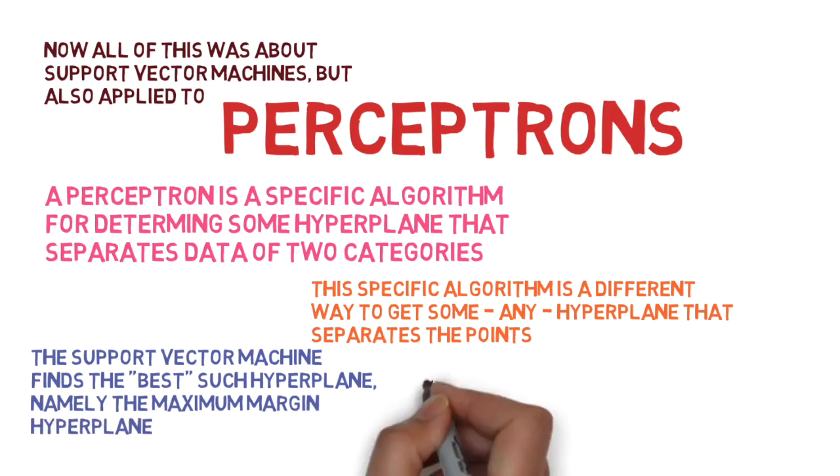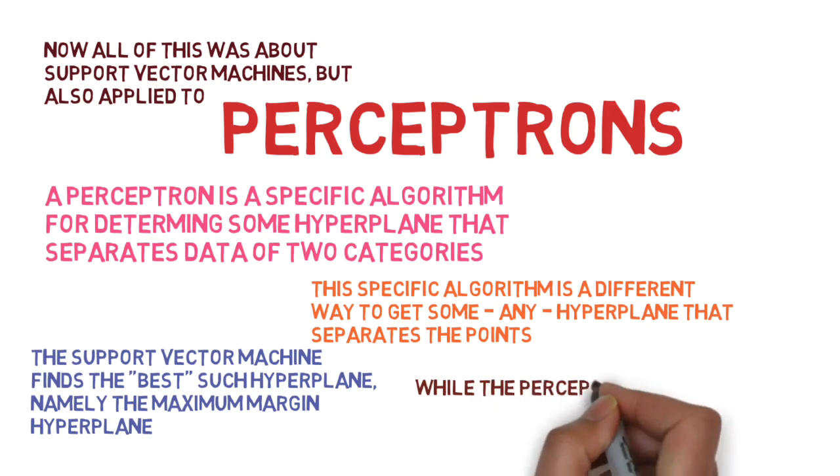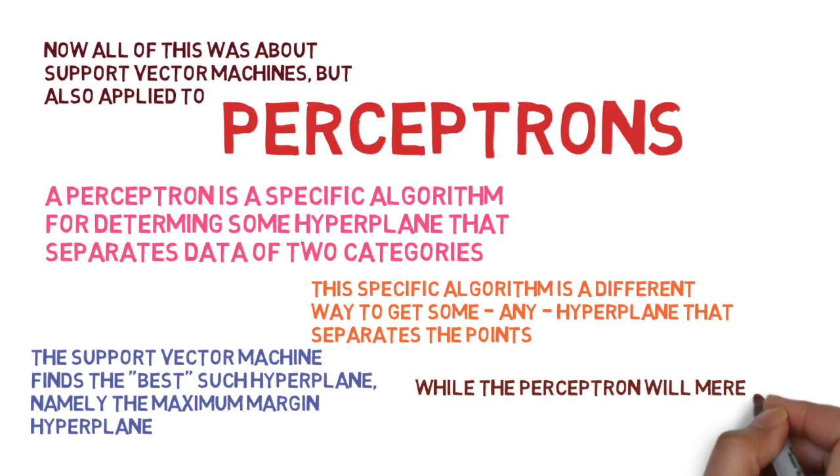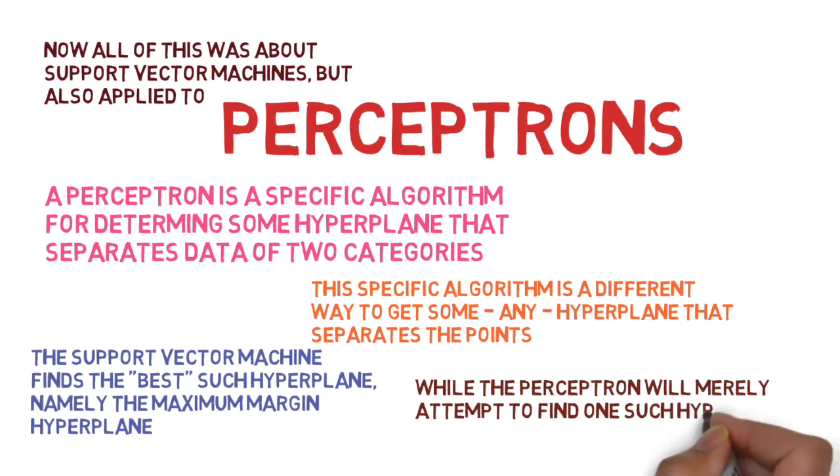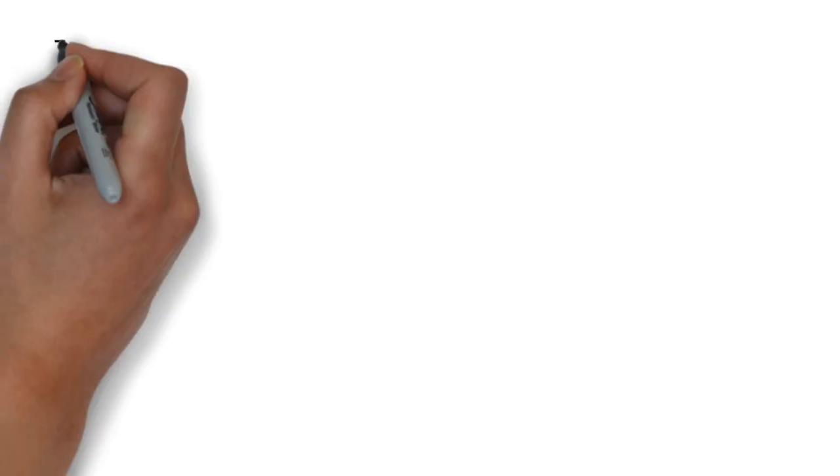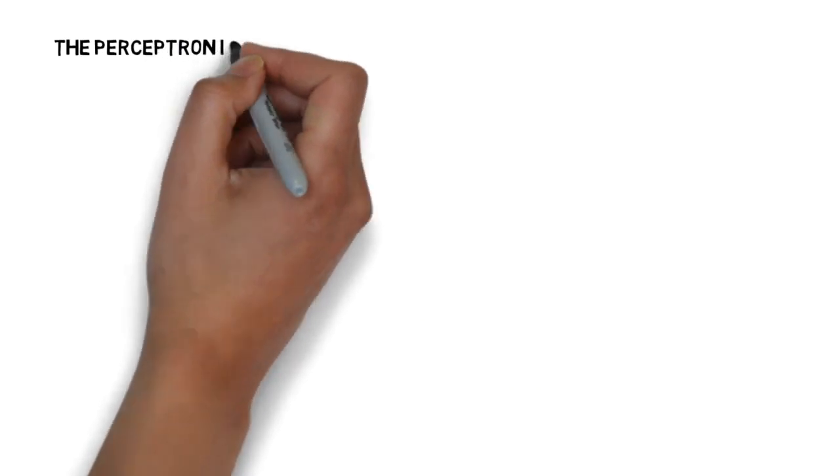So the support vector machine finds the best hyperplane that can divide the two categories of points, while the perceptron will simply attempt to find one such hyperplane that could separate the points, not necessarily the best hyperplane.